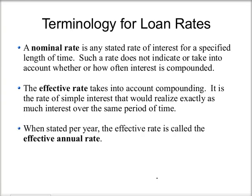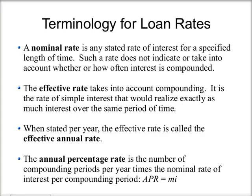When we look at that per year, it's called the effective annual rate, which is what we calculated in the example. The annual percentage rate, or APR, is the number of compounding periods per year times the nominal rate of interest per compounding period — given by M times I.